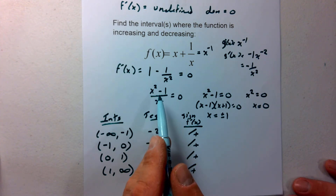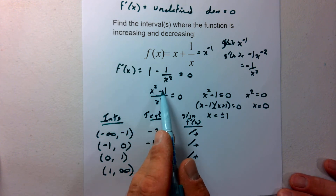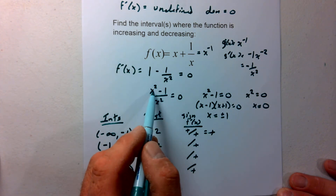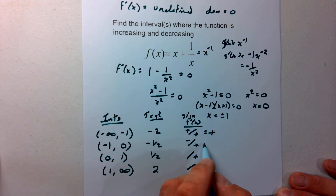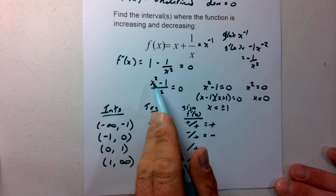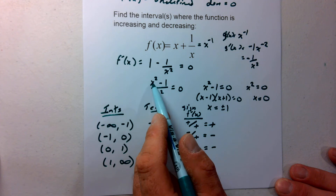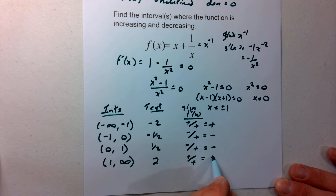So plugging in negative 2 gives a positive divided by positive, which is positive. Plugging in negative one half: one fourth minus 1 gives a negative divided by positive, which is negative. Plugging in one half: the same — one fourth minus 1 gives negative divided by positive, negative. And plugging in 2: 2 squared is 4, and 4 minus 1 gives positive divided by positive, which is positive.